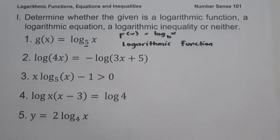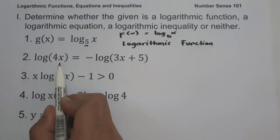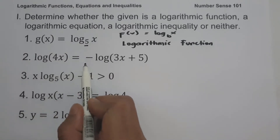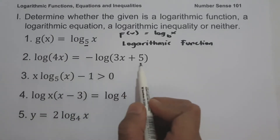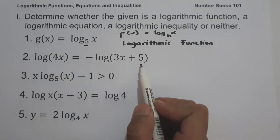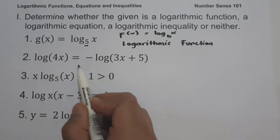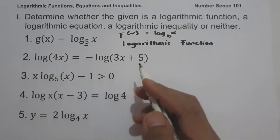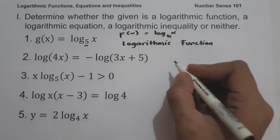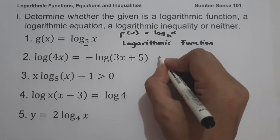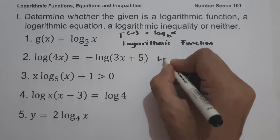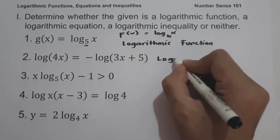On number 2, log 4x equals negative log 3x plus 5. Since we have an equation involving logarithms, this one is a logarithmic equation.